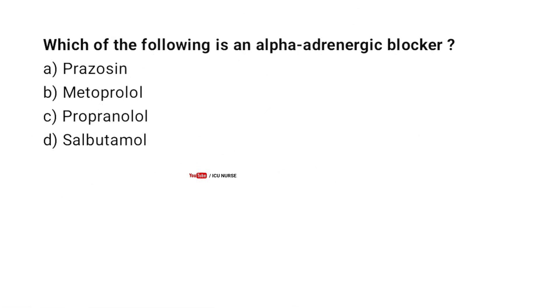Which of the following is an alpha-adrenergic blocker? Correct answer A. Prazosin.